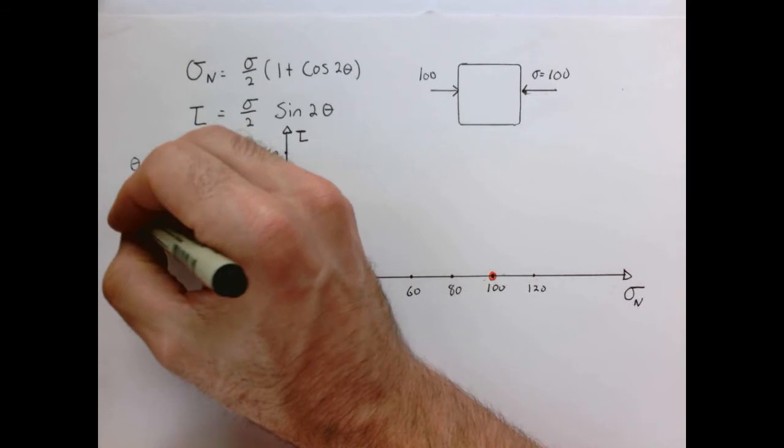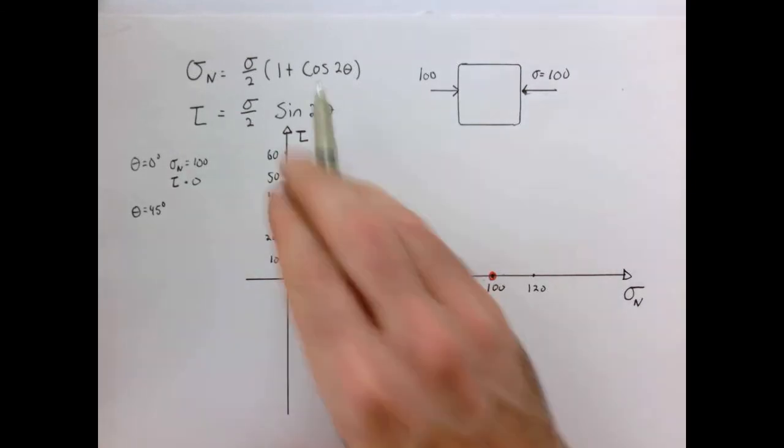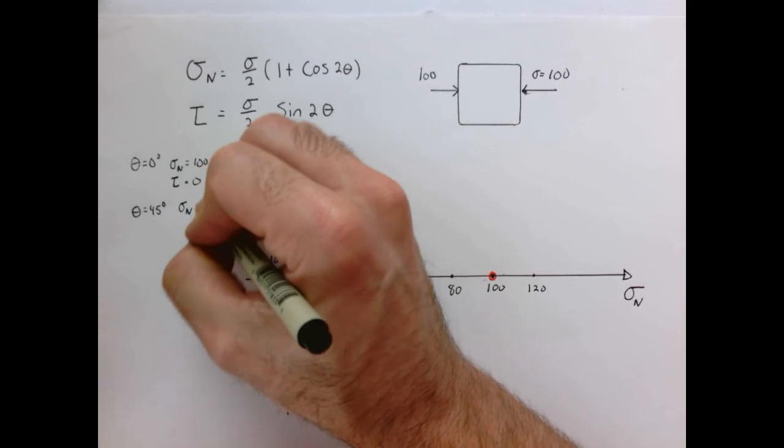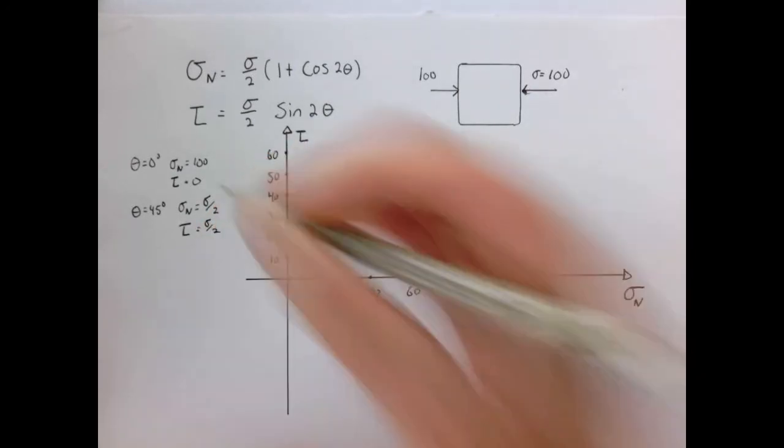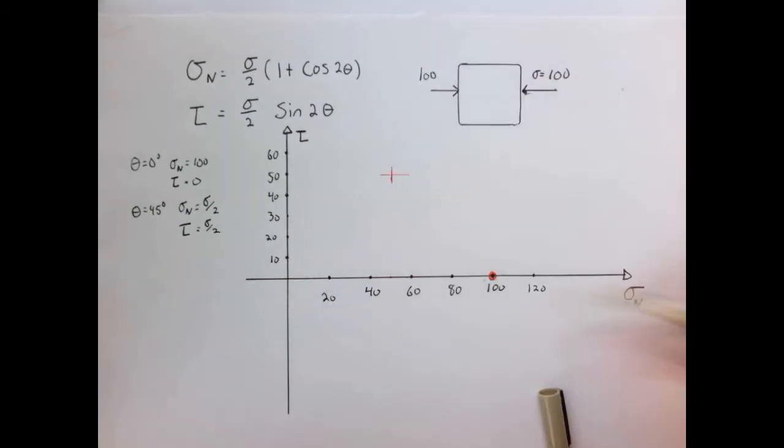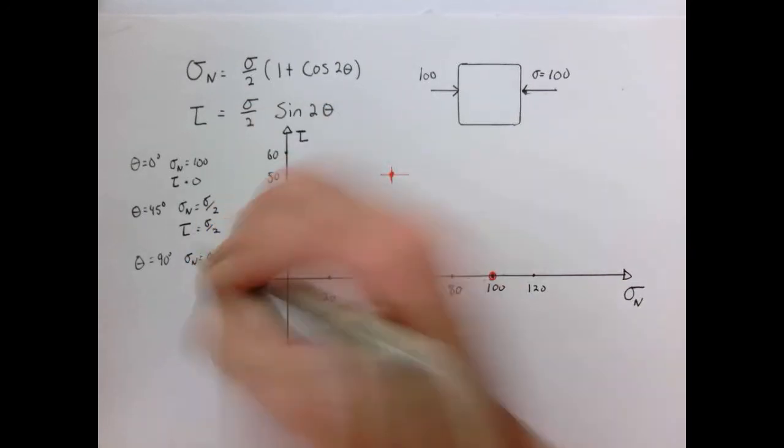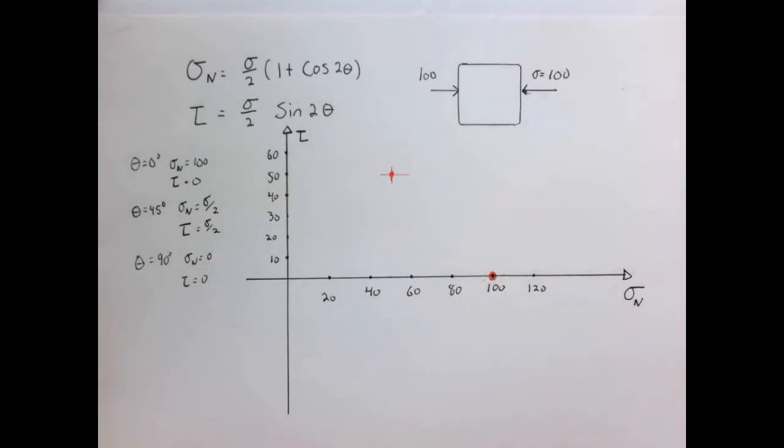Now let's put another point at 45 degrees. Now we have the cosine of two times 45, so the cosine of 90, which is zero. And we have the sine of 90 when theta is equal to 45 degrees. So I locate the intersection of sigma over two, 50, 50. If we go to 90 degrees, now we have the cosine of 180, which is minus one. So the normal stress is equal to zero. And the sine of 180 is also zero. So the shear stress is equal to zero. So there we have three points.